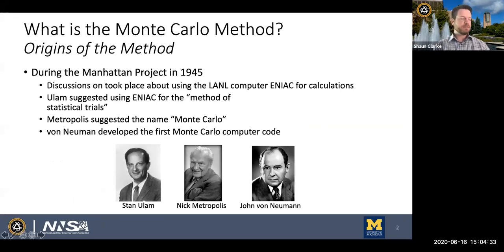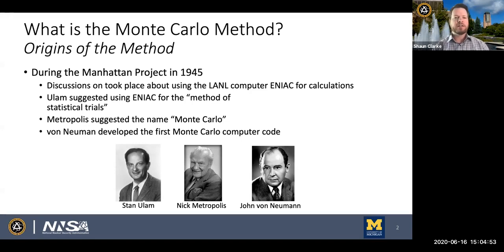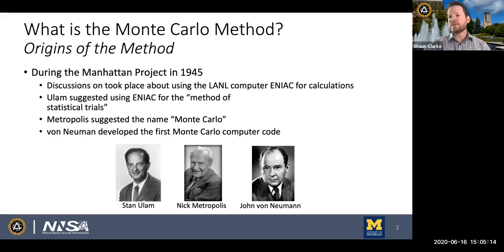Just a brief recap in case some folks missed the lecture this morning: the Monte Carlo method dates back to the Manhattan Project. In the mid-1940s, much of the focus was on the weapons program. There was a proposal at Los Alamos National Lab to use their then-supercomputer, ENIAC, for calculations needed to design early nuclear weapons. Stan Ulam was the first to suggest using this machine for what he called a method of statistical trials, which became the Monte Carlo method.